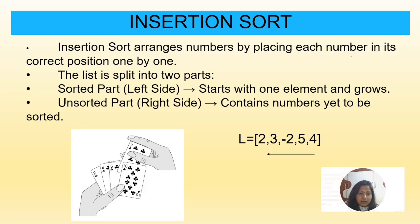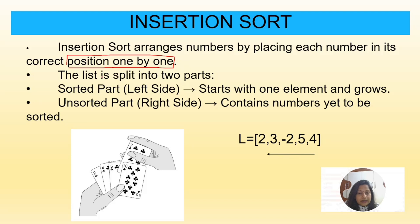Insertion sort arranges numbers by placing each number in its correct position one by one. Compared to selection sort and bubble sort, in insertion sort you take out a number and immediately place it in a particular position — that is the main difference. Another difference is it will go in the backward direction, right to left. In bubble sort and selection sort, it starts from index 0 and keeps comparing and swapping. In selection sort, it finds the minimum value and swaps it to the first position. But insertion sort starts from the backward direction, right to left, and that is the main difference. One by one it will swap and at the end you get the sorted order.